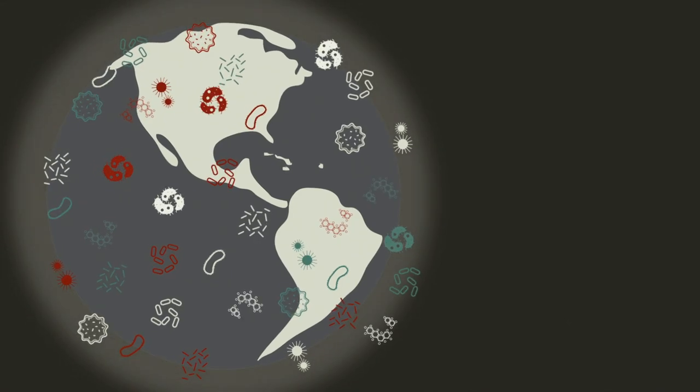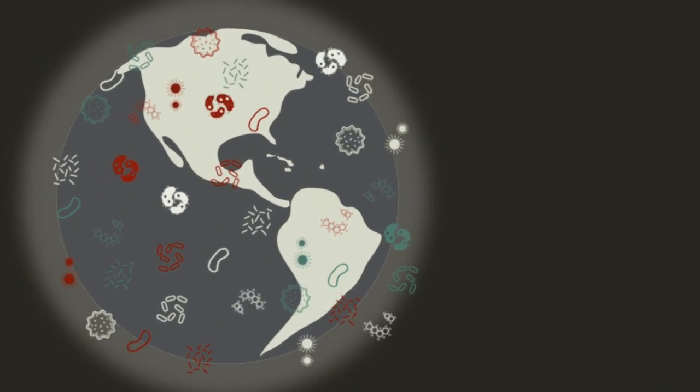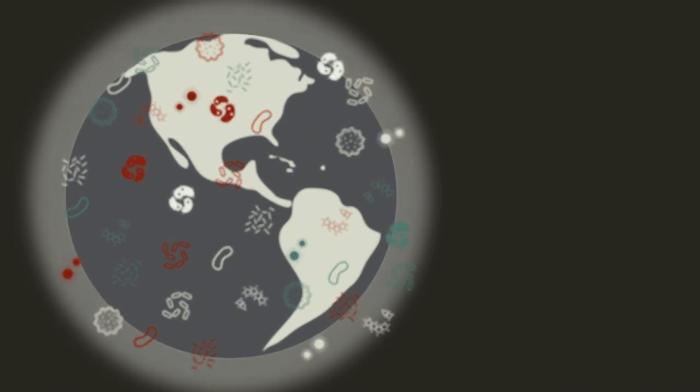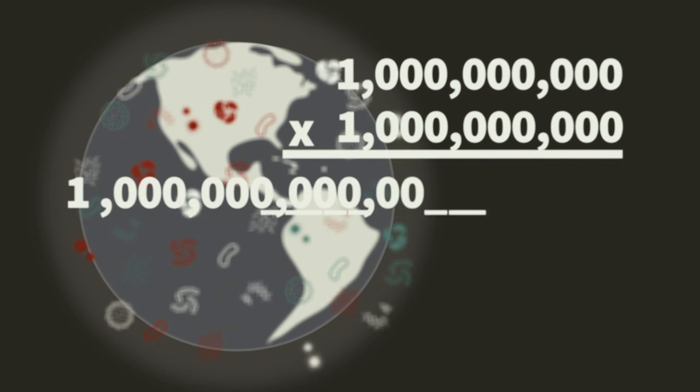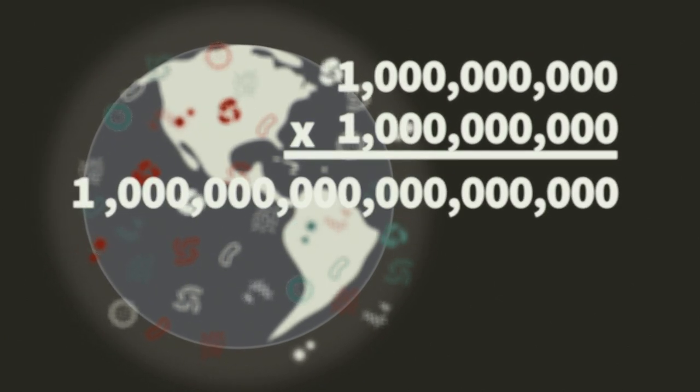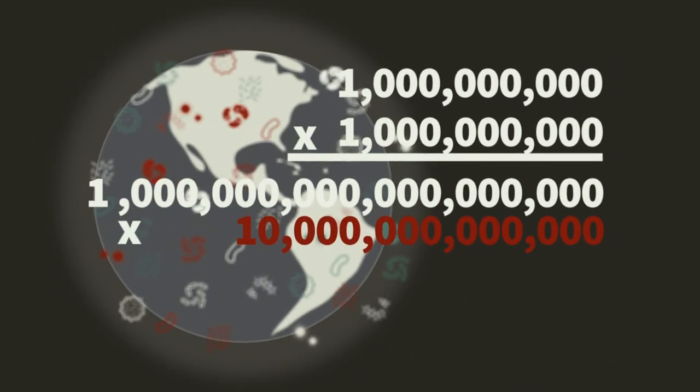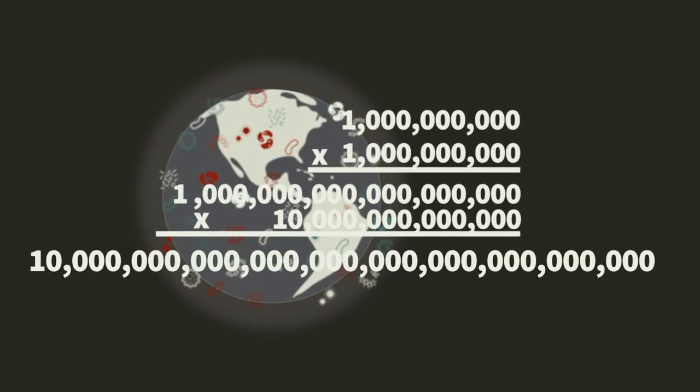Viruses are easily the most abundant life form on Earth, if you accept the proposition that they're alive. Try multiplying a billion by a billion, then multiply that by 10 trillion. And that, 10 to the 31st power, is the mind-boggling number of individual viral particles estimated to populate the planet.